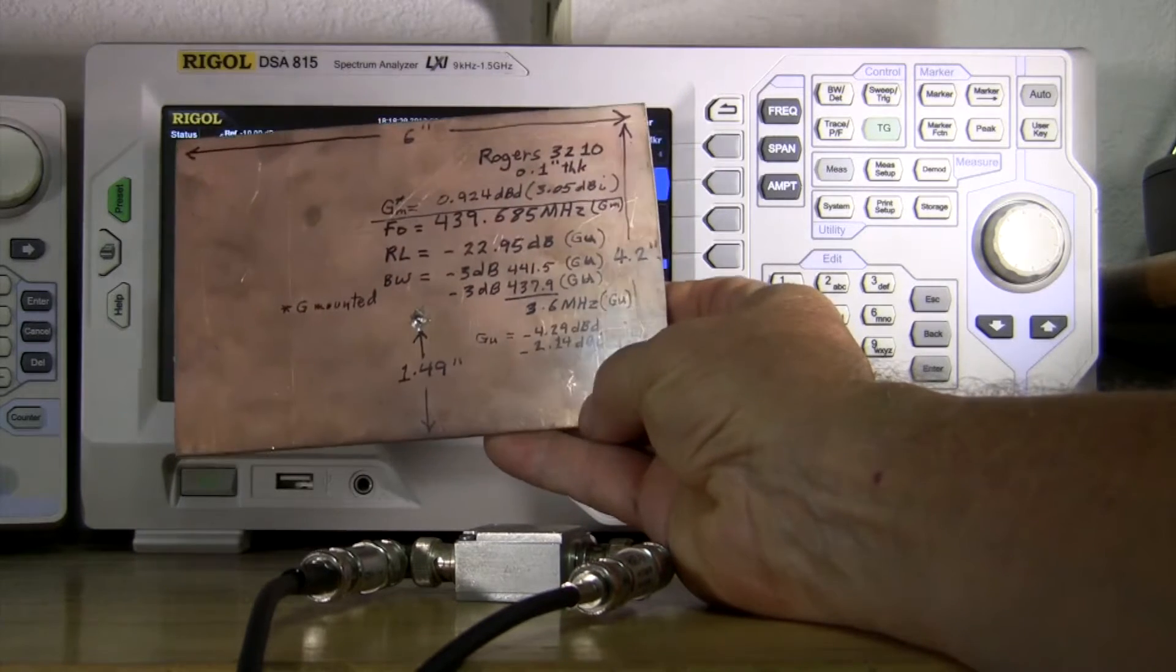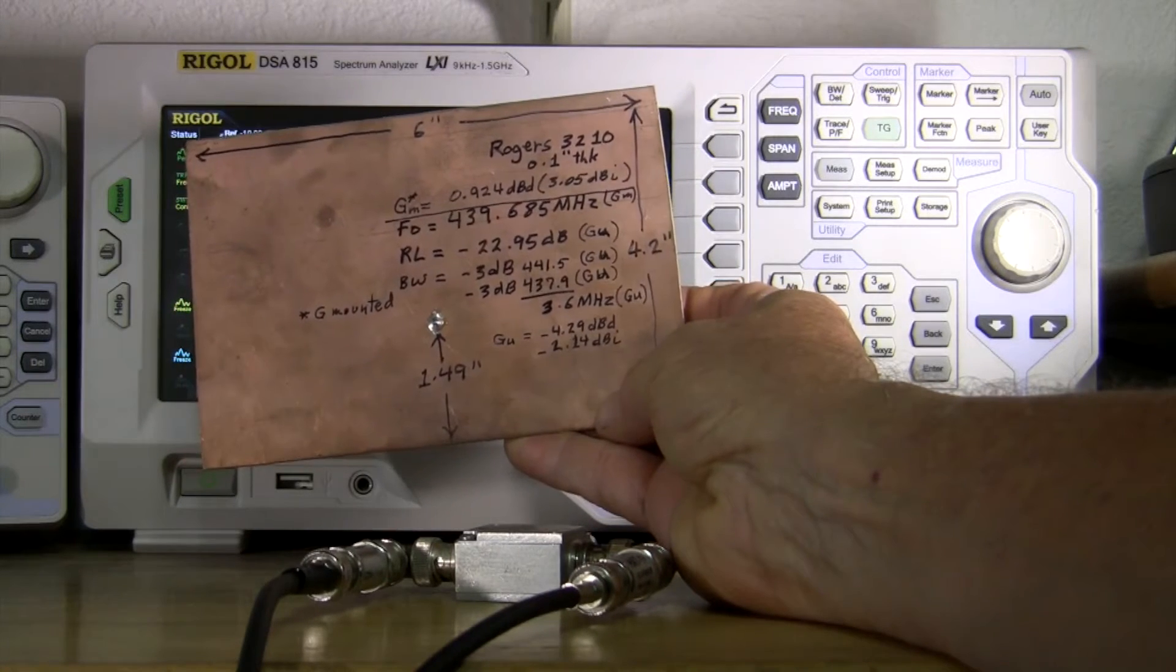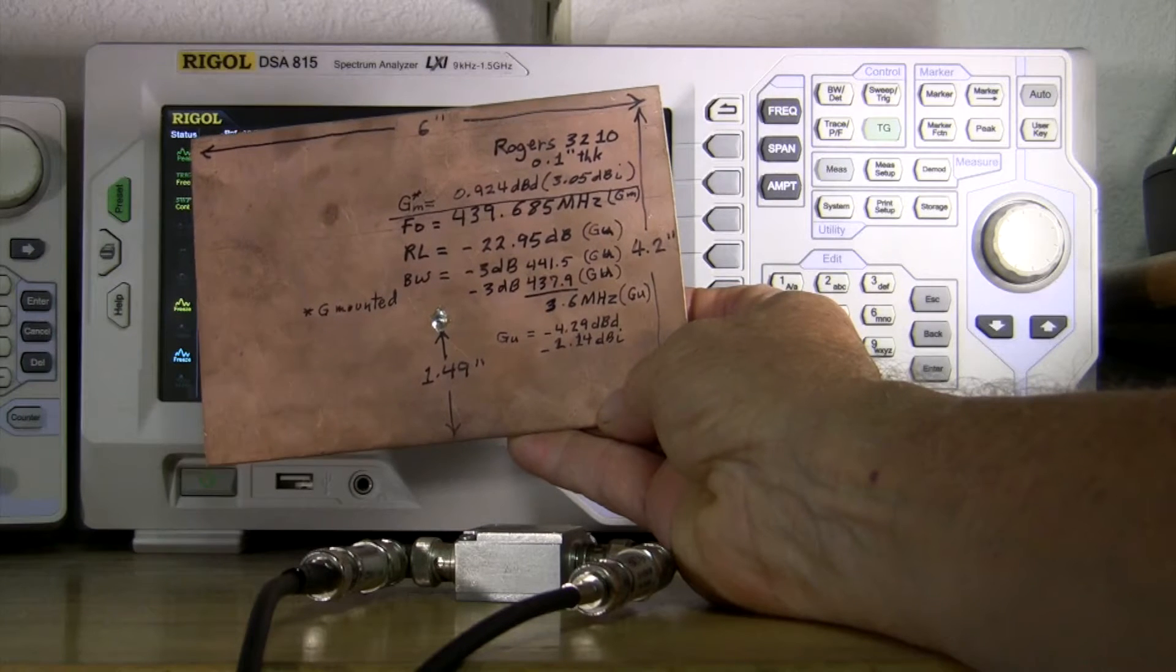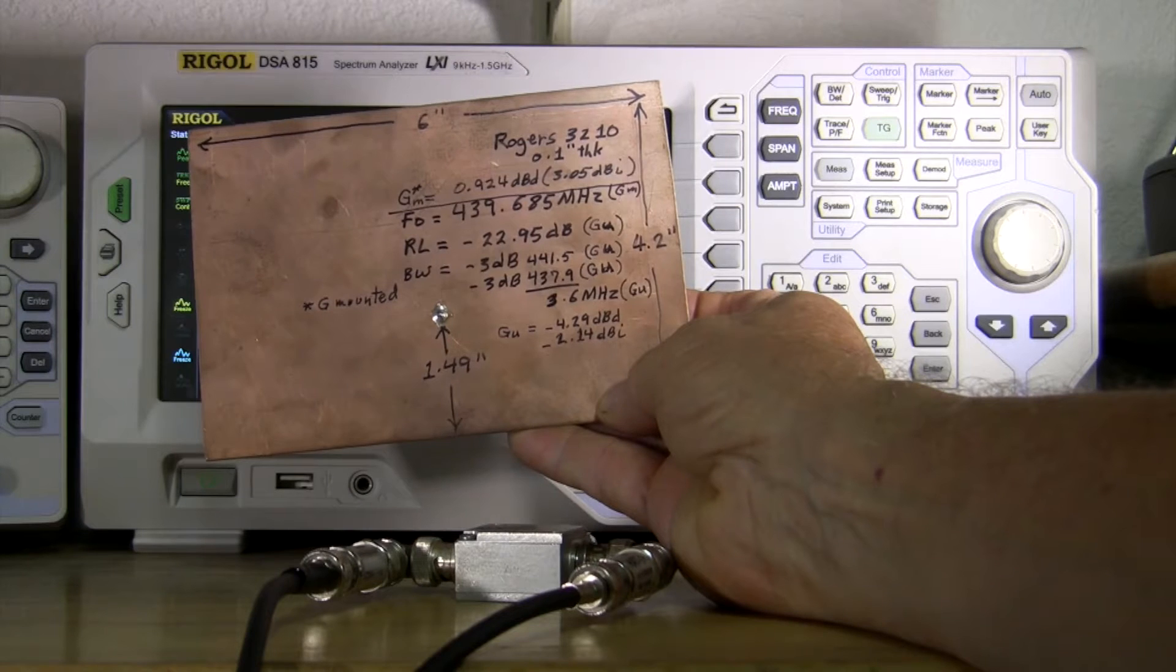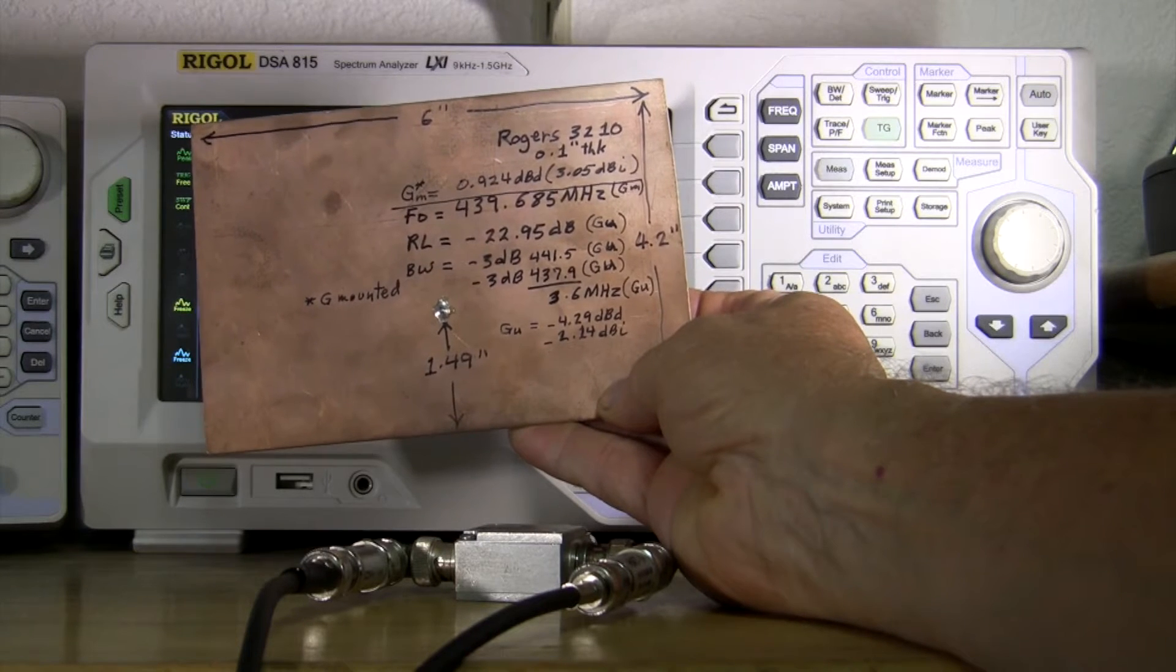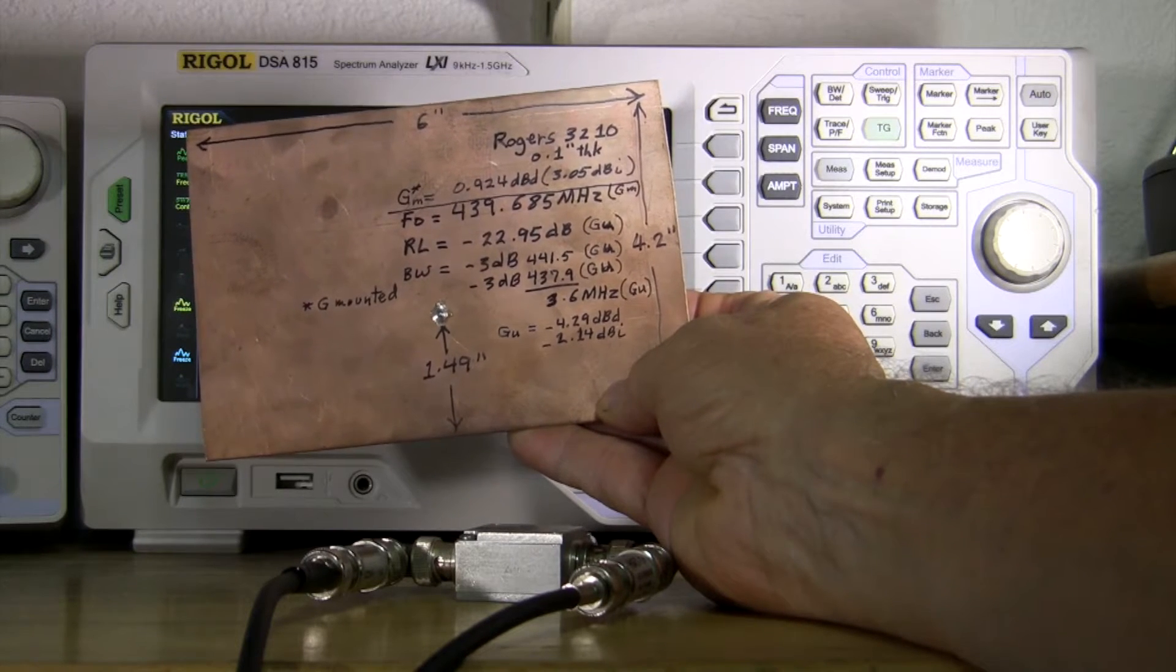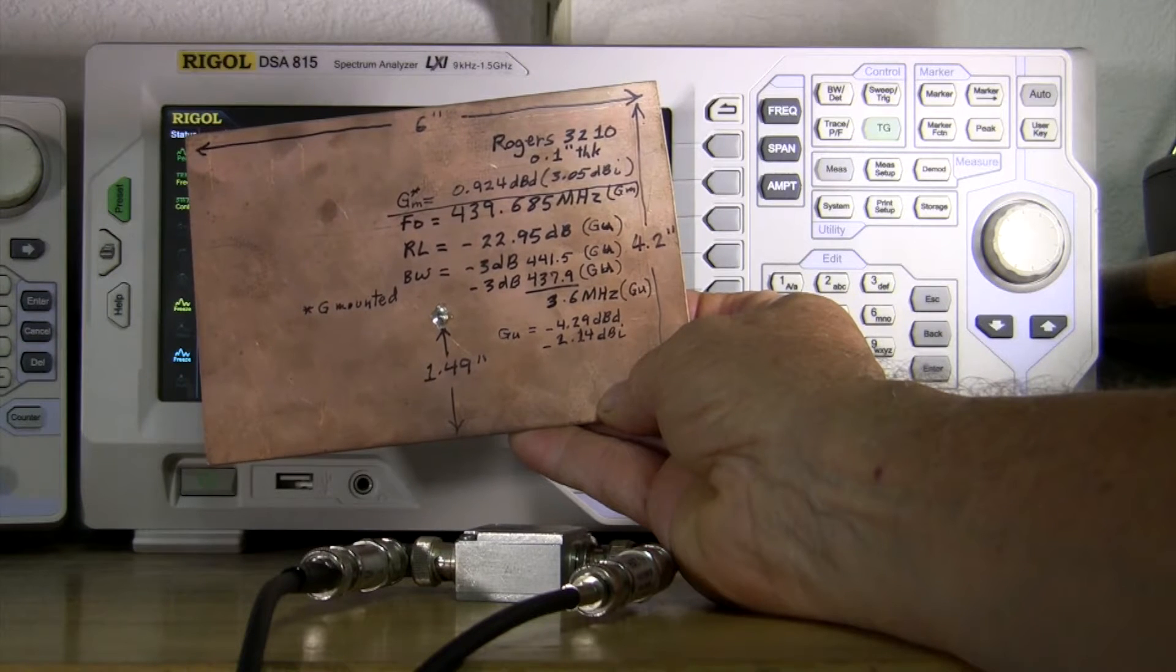You can see it was 6 inches by 4.2 inches on a side here and the feed point was in this center, 1.49 from the bottom edge here. So that's where the match seemed to be the best when it was unmounted.